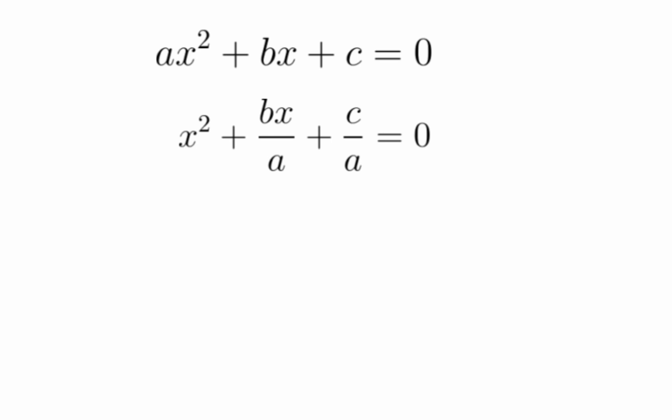So, let's divide everything by a, we get x squared plus bx over a plus c over a equals 0. And here, we just move c over a to the other side. So, x squared plus bx over a equals negative c over a.